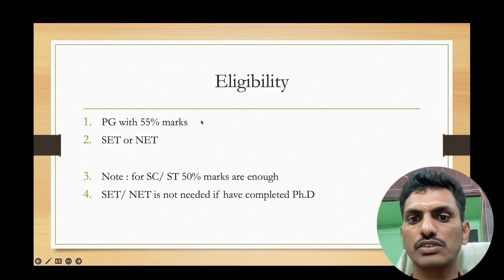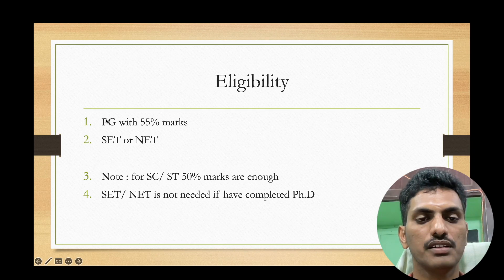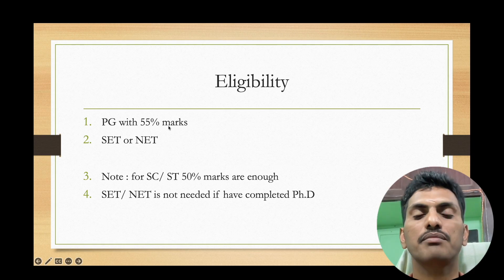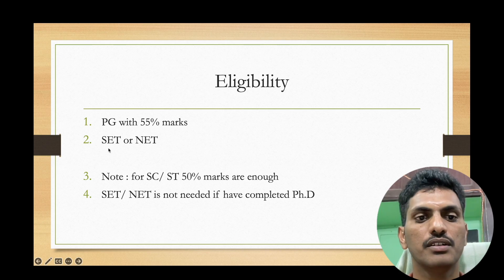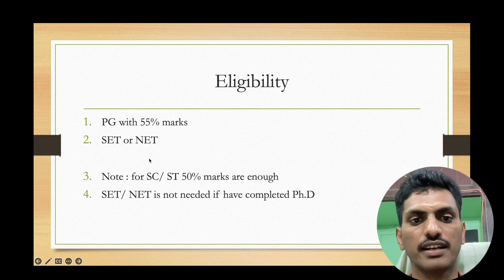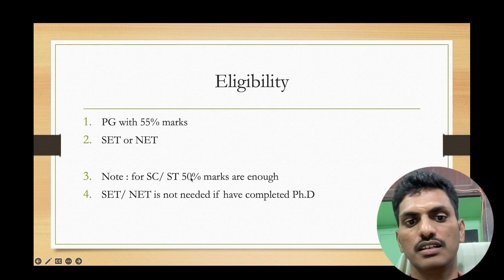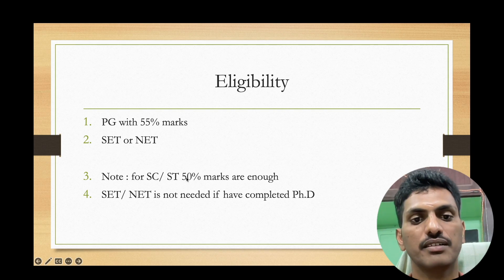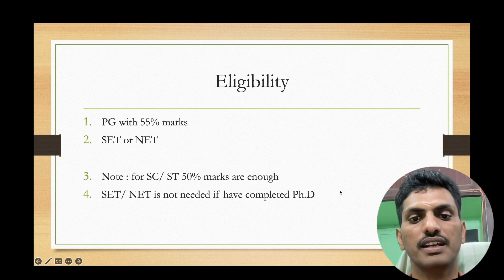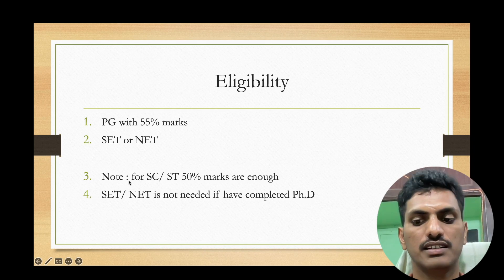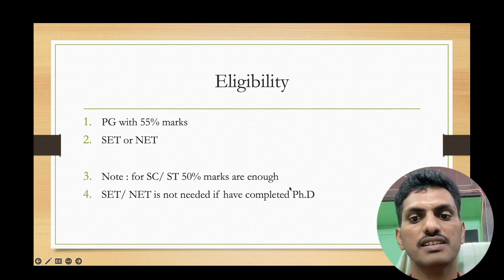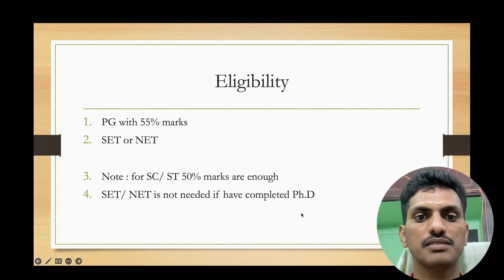In eligibility, we need to remember two things. One is, we need to have PG post-graduation with 55% marks. The second is, we need to have either SET or NET qualification. For SC and ST candidates, 50% marks are enough in post-graduation. Another important thing: if you have completed a PhD, you don't need SET or NET. PG plus PhD makes you eligible for Assistant Professor.